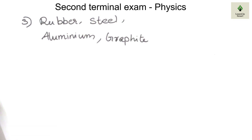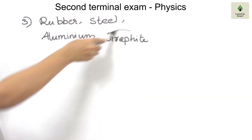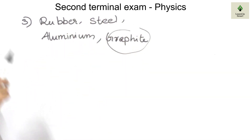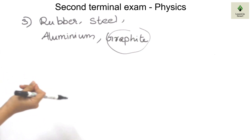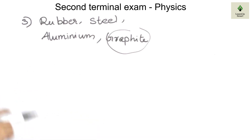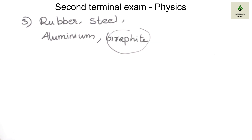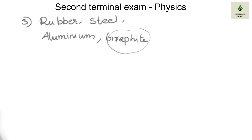We have lubricants — solid, liquid, and foam. In addition, we have liquid and solid lubricants. Graphite is a solid lubricant. Graphite is a solid lubricant because of its slippery nature. That is why it acts as a solid lubricant, which we have studied in higher classes.